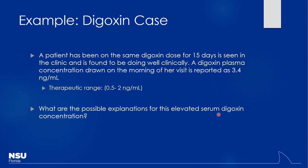Let's go through a case where therapeutic drug monitoring is utilized and see what could be influencing it — how you have to be a little bit of a detective. Let's talk about digoxin. It's an antiarrhythmic — used for AFib, and more commonly for CHF. It's a very old drug with a very narrow therapeutic index: therapeutic range is between 0.5 and 2 nanograms per ml, with normal doses around 0.125 milligrams. A patient has been on this dose for 15 days, comes in appearing to do well clinically, but their plasma concentration is 3.4 — which looks too high.